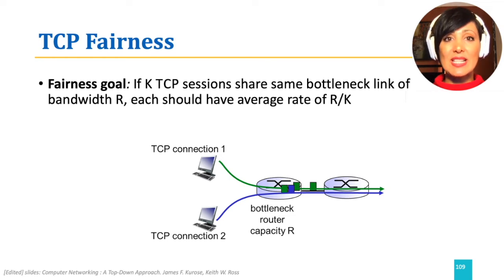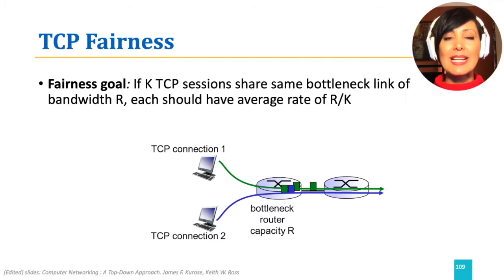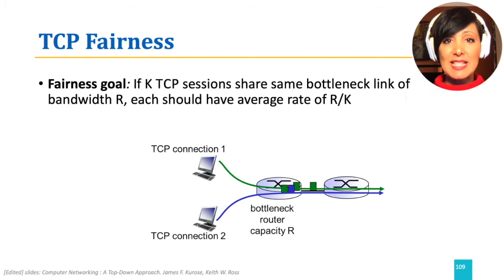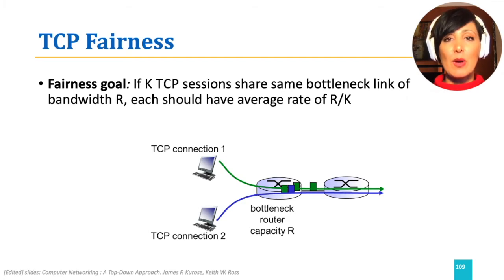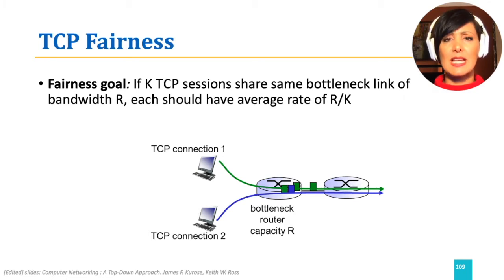An important characteristic that follows TCP's congestion control behavior is TCP fairness. Fairness means if K TCP sessions share the same bottleneck link of bandwidth R, each should have an average rate of R divided by K. But is TCP fair, and if yes, why?